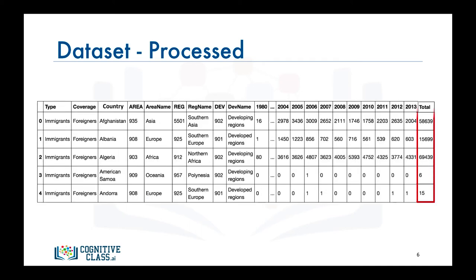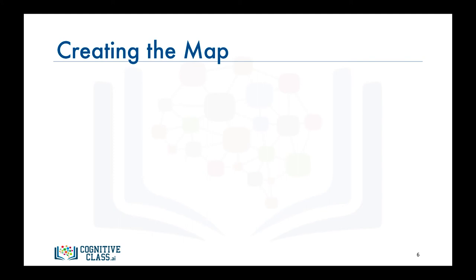Let's process the data and add an extra column representing the cumulative sum of annual immigration from each country from 1980 to 2013. For Afghanistan, for example, the total is 58,639, and for Albania it is 15,699, and so on. We'll name our data frame df_Canada. Now that we know how our data is stored in df_Canada, let's see how we can generate the choropleth map.